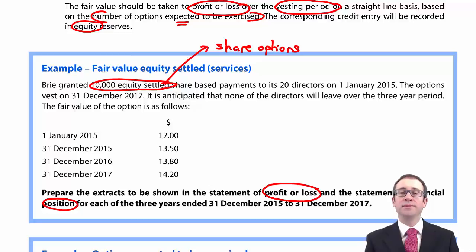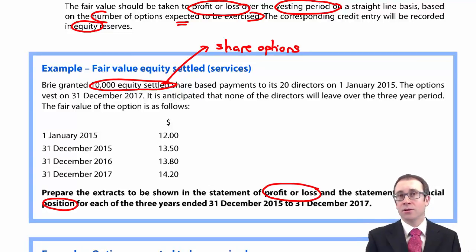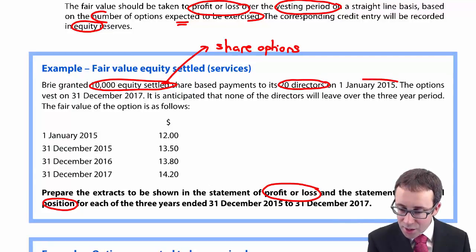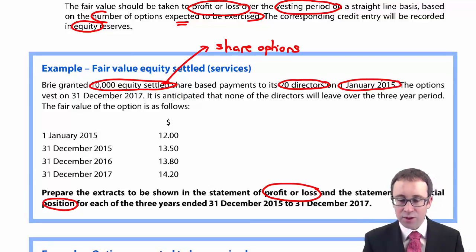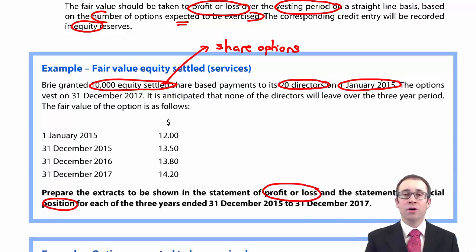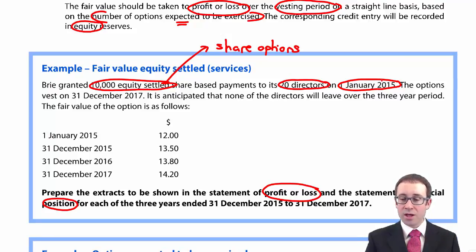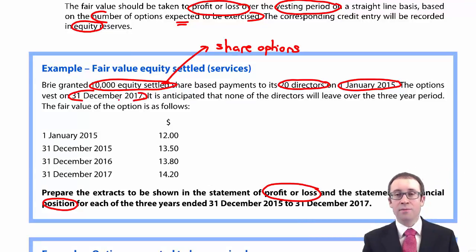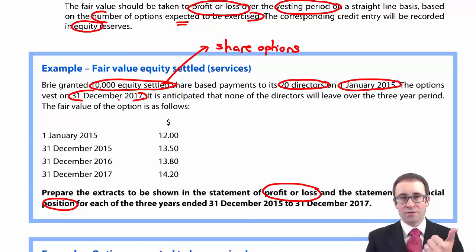You need to be comfortable with the terminology: 10,000 share options is the same as 10,000 equity-settled share-based payments. The number of employees is 20 directors. The share-based payment scheme started — so the grant date is 1st January 2015 — and the requirement asks us to look at 2015, 2016, and 2017, three years of the scheme. Coincidentally, the options vest on 31st December 2017, which is a three-year vesting period.